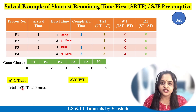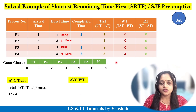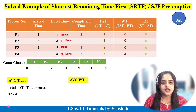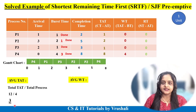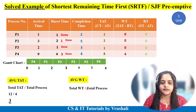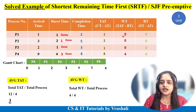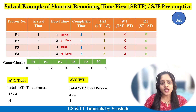Now calculate the average turnaround time. The formula is total turnaround time divided by total number of processes. Total turnaround time is 1 plus 2 plus 1 plus 8 equals 12, divided by 4 processes, giving an average turnaround time of 3 units. Next, average waiting time: total waiting time is 4 (0 plus 0 plus 0 plus 4) divided by 4 processes equals 1 unit. So the average waiting time is 1 unit of time. Practice this example — it is one of the most important examples for your exam.